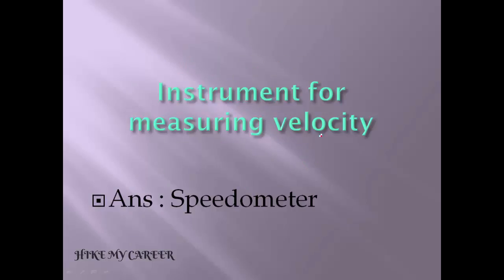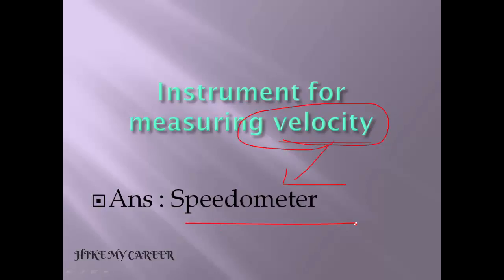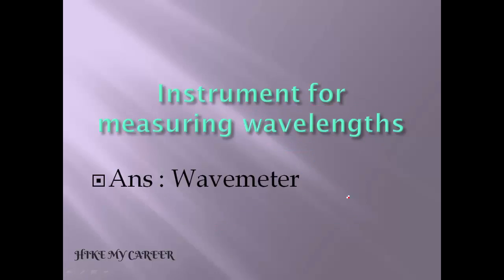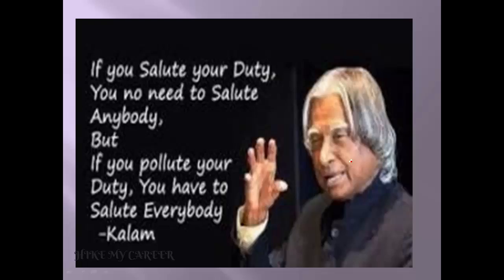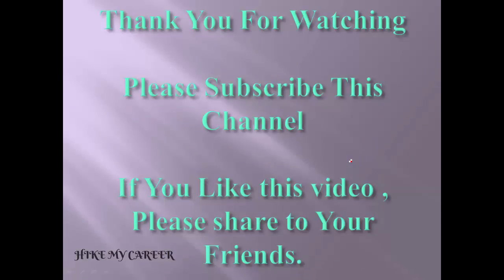Which instrument is used for measuring velocity? Velocity means speedometer. Which instrument is used for measuring wavelengths? Wavelength means wavemeter.